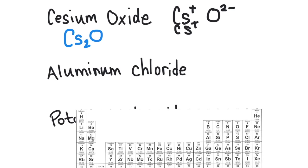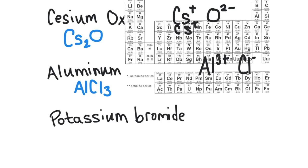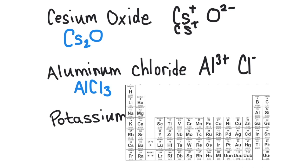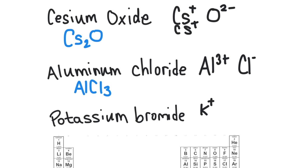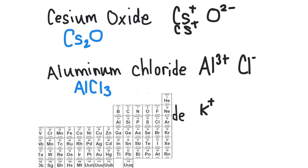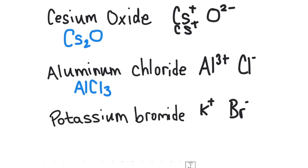Next is aluminum chloride. Aluminum is in Group 3, so it has a +3 charge. Chloride is in Group 7, so it has a −1 charge. I need three chlorides to balance the +3, giving AlCl₃. For potassium bromide, potassium is in Group 1 (+1 charge) and bromide is in Group 7 (−1 charge). They're already balanced, so the formula is simply KBr.